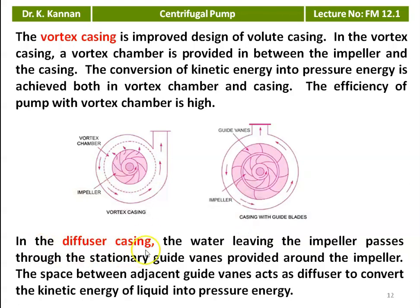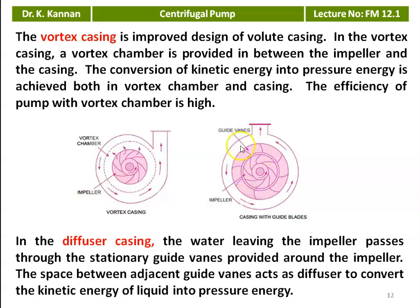The third type of casing is the diffuser casing. The water leaving the impeller passes through stationary guide vanes provided around the impeller. The space between adjacent guide vanes acts as a diffuser to convert the kinetic energy of the liquid into pressure energy. The diffuser space between adjacent vanes gradually increases, converting kinetic energy of the liquid into pressure energy, and then the high-pressure liquid flows through the casing and leaves through the delivery valve.